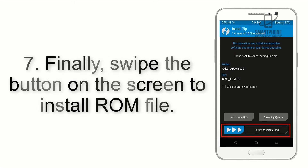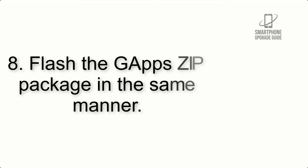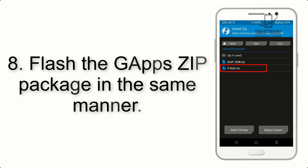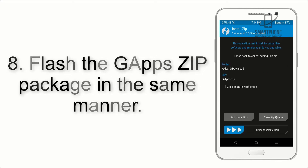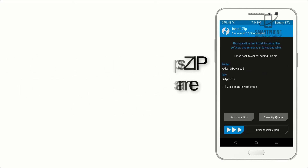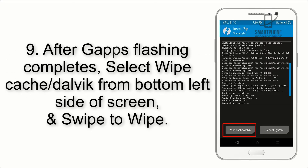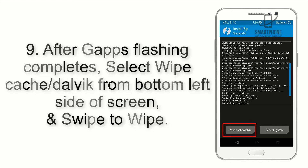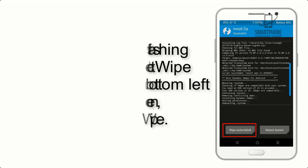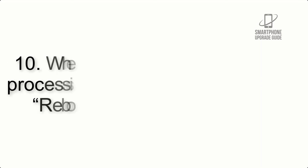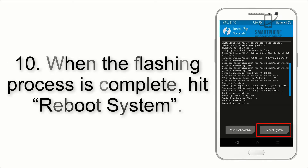Step 7: Swipe the button on the screen to install the ROM file. Step 8: Flash the gapps zip package in the same manner. Step 9: After gapps flashing completes, select Wipe Cache and Dalvik from the bottom left side of the screen and swipe to wipe.